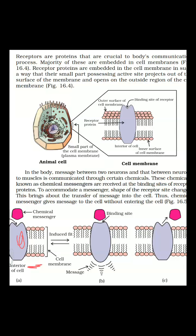The transference of message from receptor targets to the cell takes place via these receptors, which are partially embedded. Receptor targets play a very important role — they help in transferring messages from messengers to the cell. Messengers are actually chemical compounds which are received at the active sites of the receptor proteins.